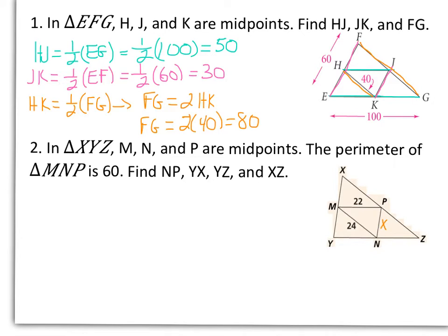And if I want to find what X is, or NP, we'll just add up all our sides, and it has to equal 60. So let's combine like terms. So I get X equals 14, so it tells me NP is 14.